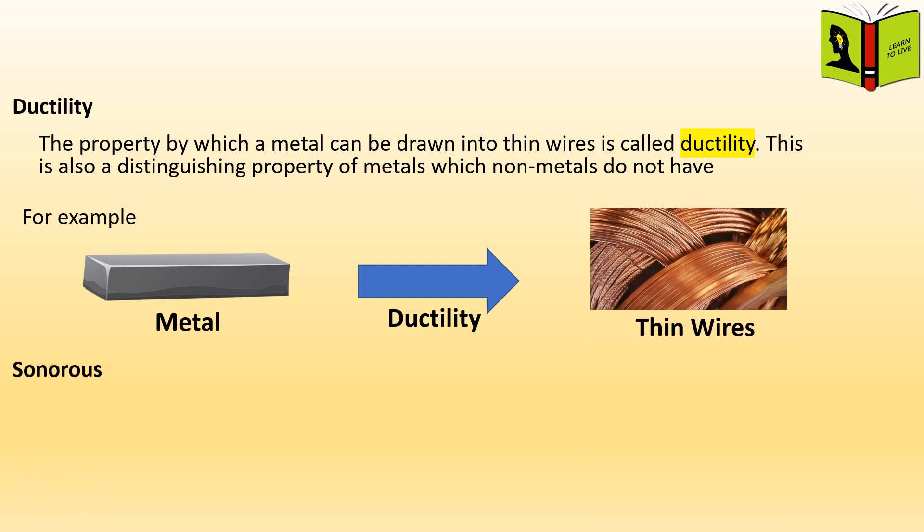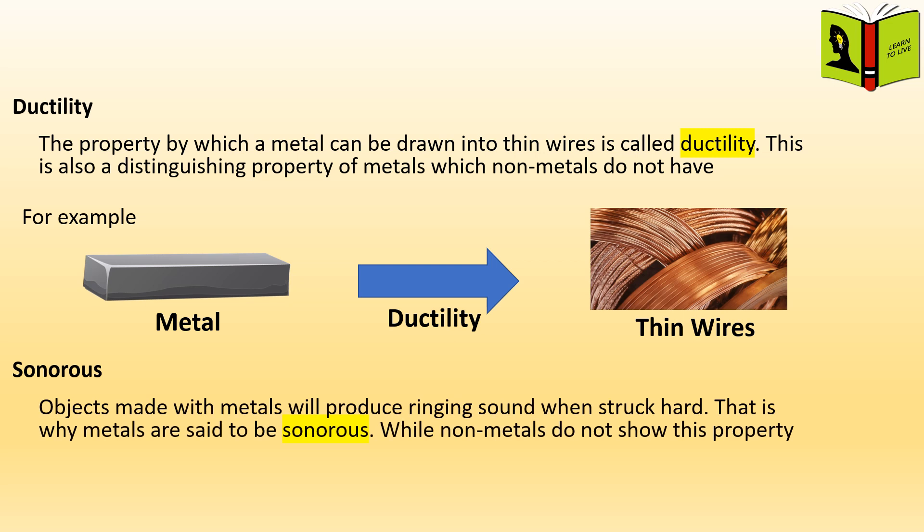Sonorous. Objects made with metals will produce a ringing sound when struck hard. That is why metals are said to be sonorous, while non-metals do not show this property.